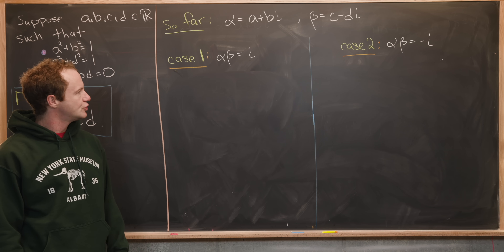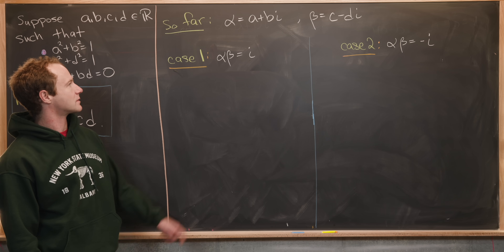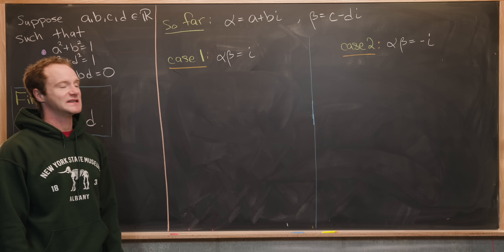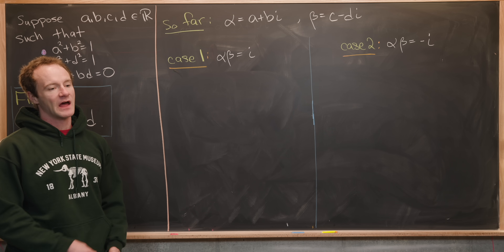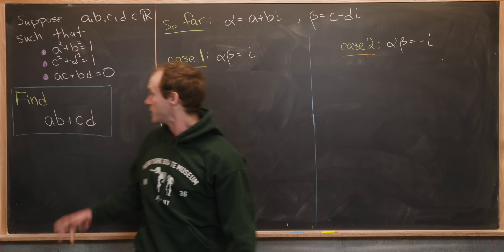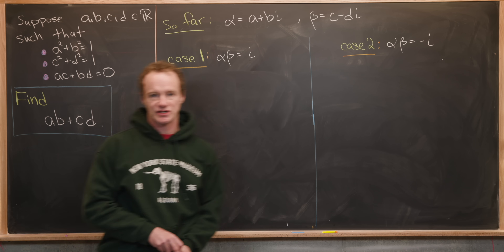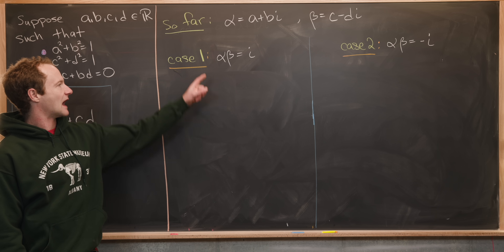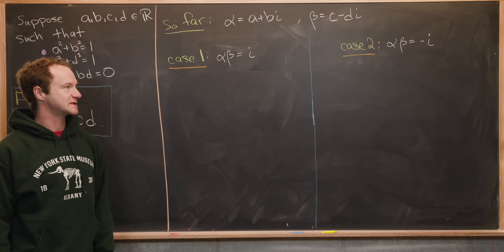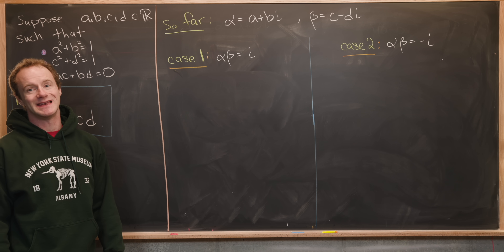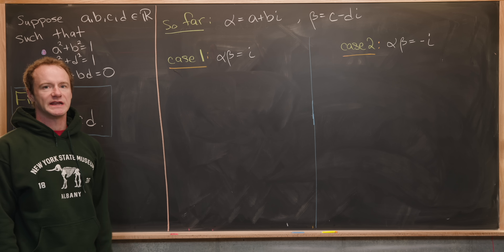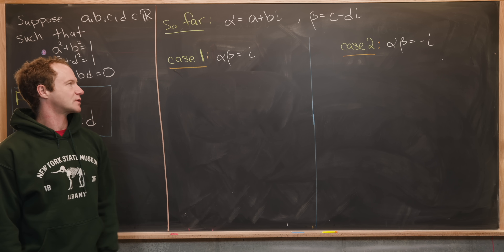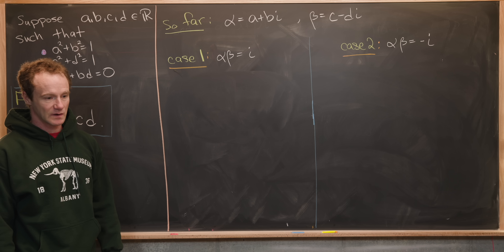On the last board we introduced two complex numbers, alpha equals a plus bi and beta equals c minus di, and used the three given equations to reduce to two final cases: alpha times beta equals i, or alpha times beta equals negative i. Now we'll look at each case, starting with the first one.